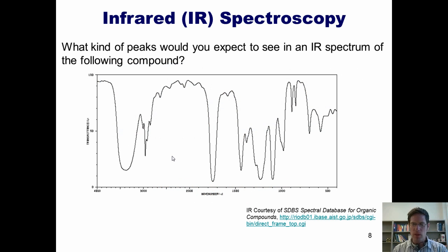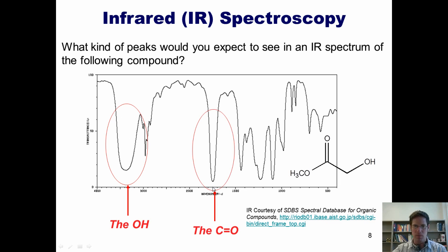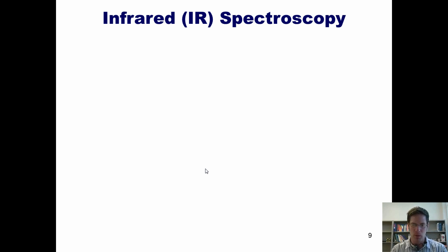What if you have a molecule that has both an OH and a carbonyl, as in this compound called methylglycolate? In its IR spectrum, you'll notice a large trough in the OH region and a carbonyl peak right there. Now, one functional group that deserves attention is the carboxylic acid, which has both a carbonyl and an OH. However, in carboxylic acid, these two bonds are grouped together rather than separated, as in the previous example.